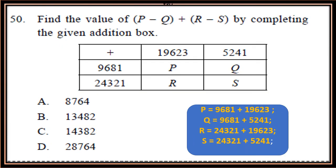Question 50: Find the value of P minus Q plus R minus S by completing the given addition box. See the hint: you can calculate the value of P, Q, R, S first, and then substitute these values in the given equation to find the value of P minus Q plus R minus S.